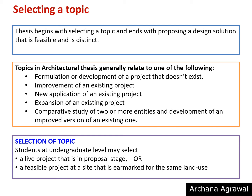For example, a multi-specialty hospital at Alibag can be selected as a topic provided the student can justify that there is a need for such a facility at Alibag and that the development plan of Alibag has the selected site earmarked for health services. In case the DP shows the land use for that site as residential, then the hospital cannot be proposed there and the student will have to select a different site.